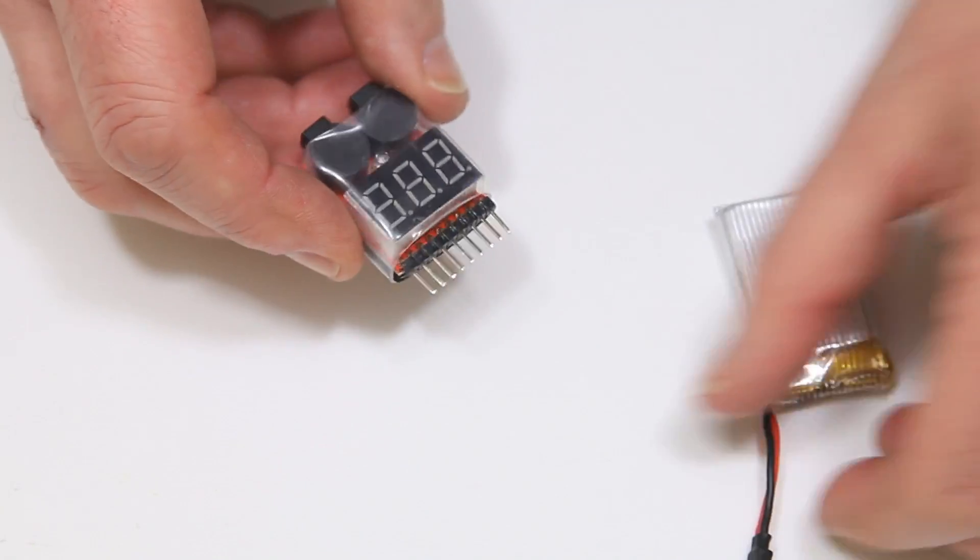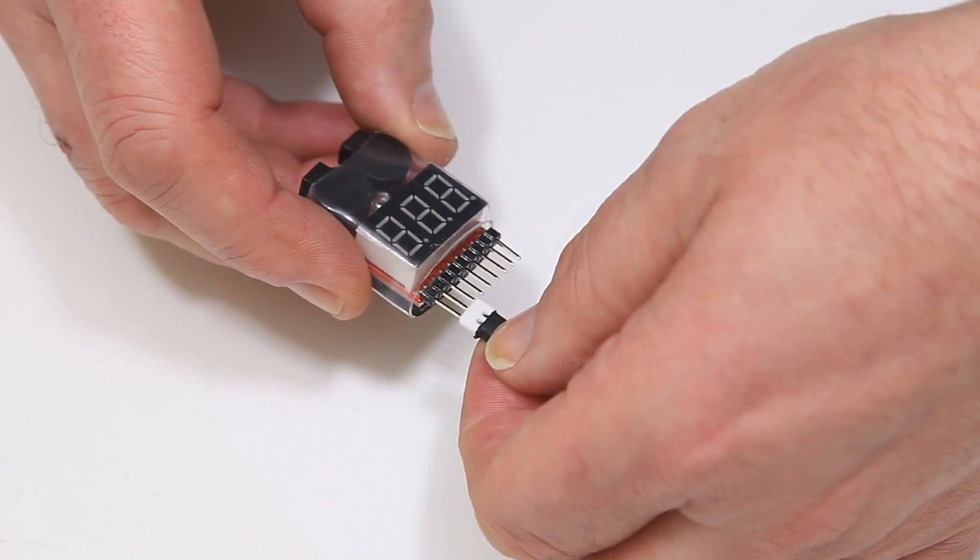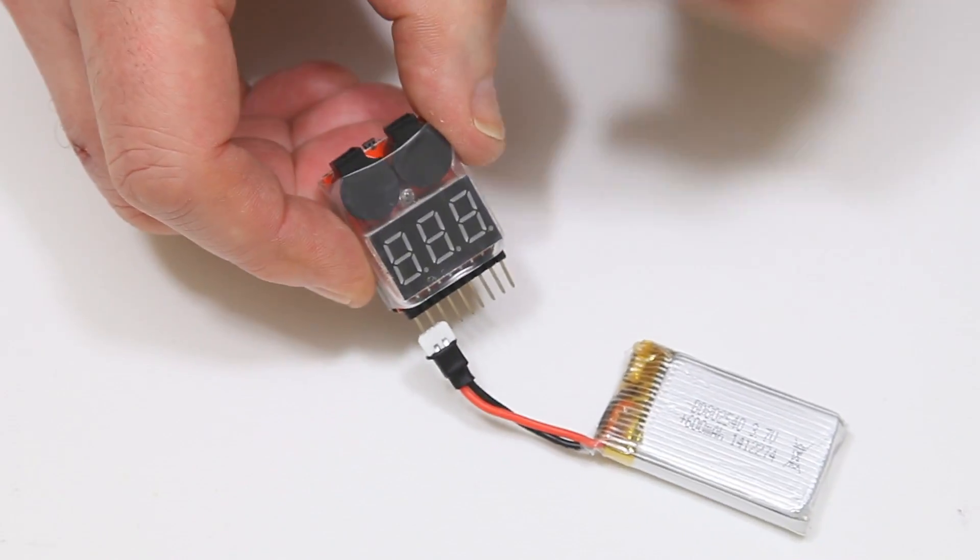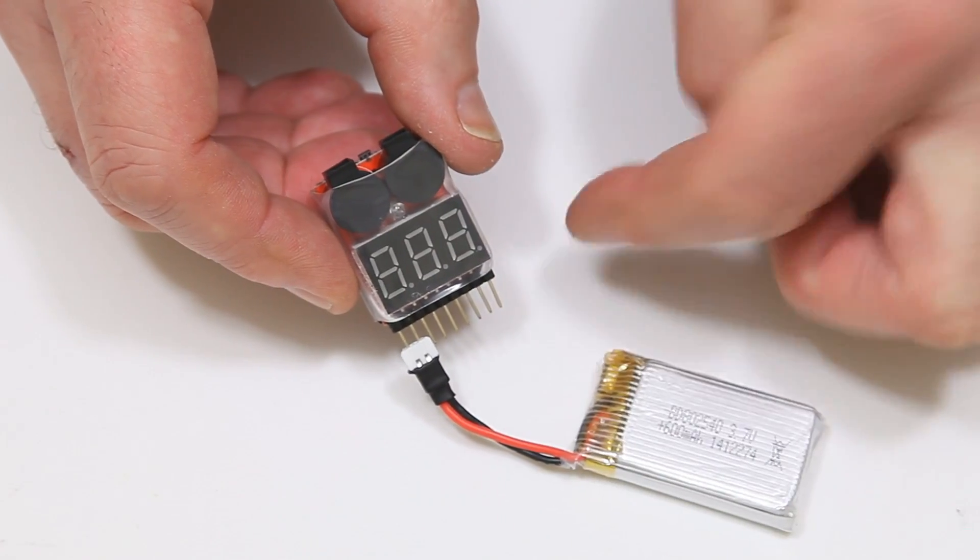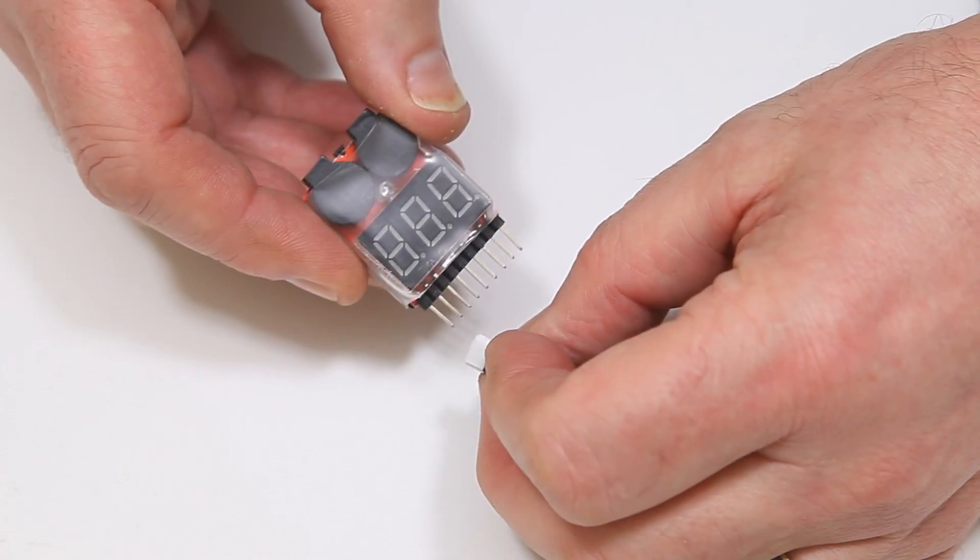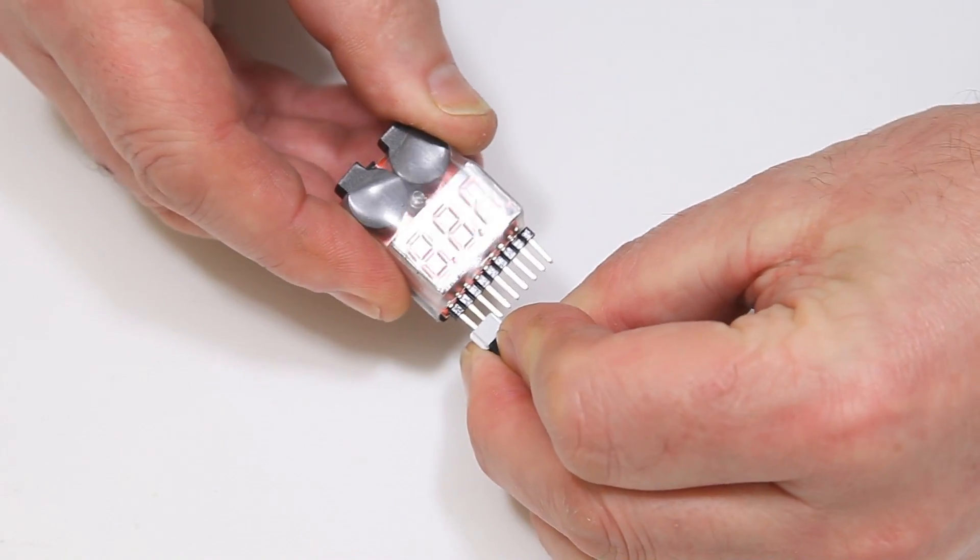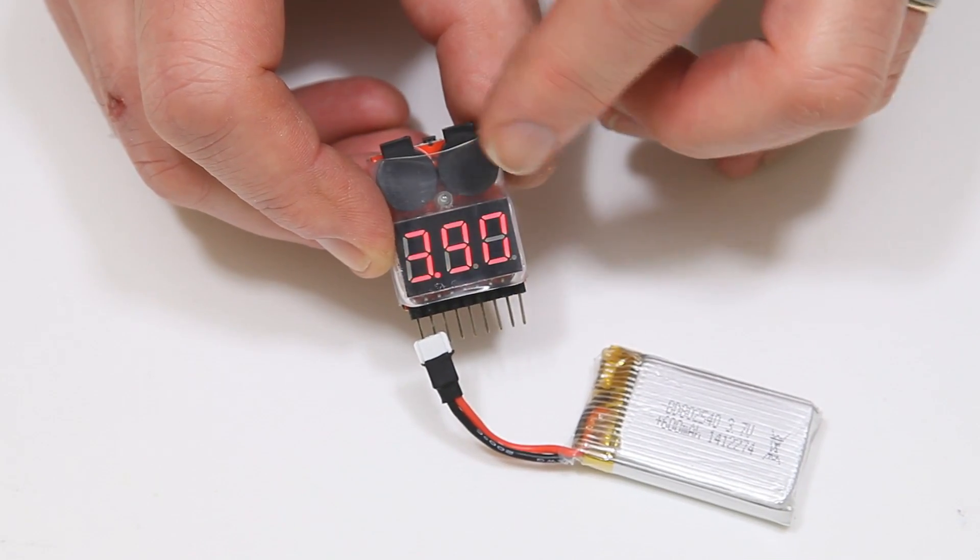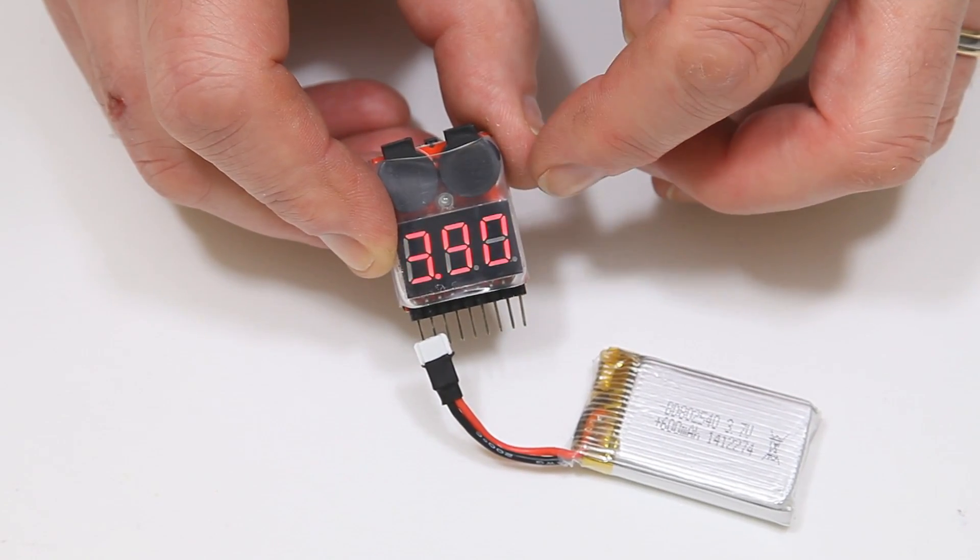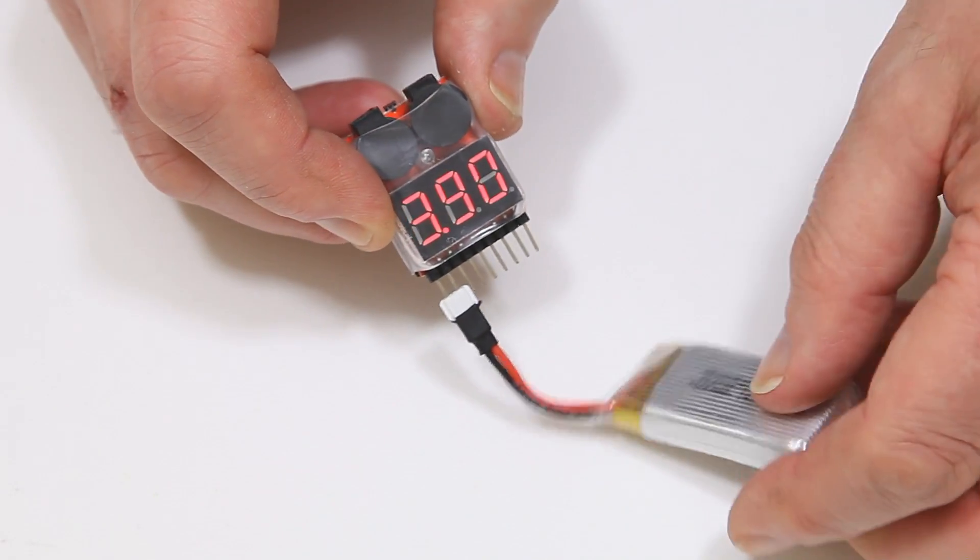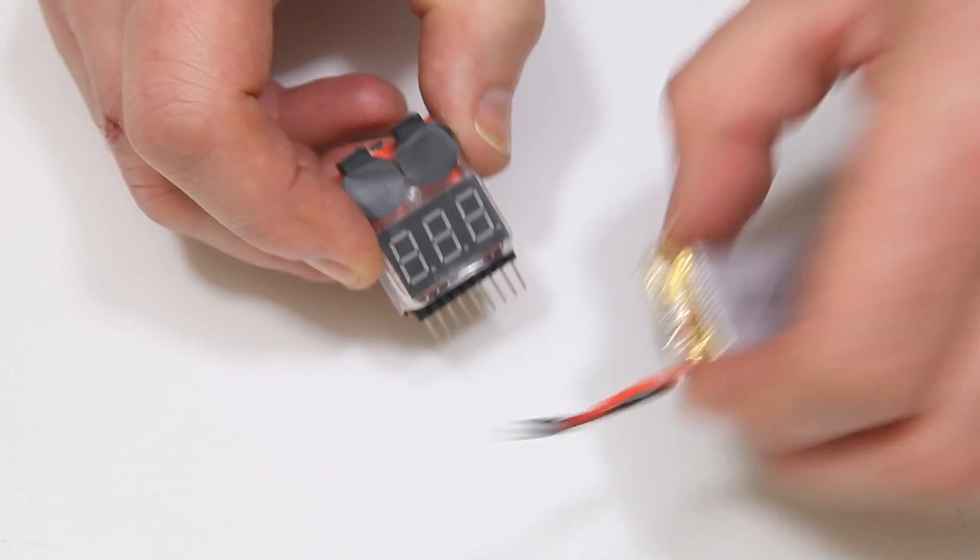Now to test any battery and this is just a single cell one here you just literally pop it in and this is a nice thing about it if you put it in around the wrong way it doesn't do anything, none of the LEDs illuminate and you haven't damaged anything. When I put it in now you can see it's reading 3.90 so we know this battery's been used or it's certainly low on power.